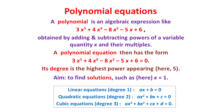A polynomial is an algebraic expression like the one shown here: 3x to the fifth plus 4x to the fourth minus 8x squared minus 5x plus 6, which is obtained by adding and subtracting powers of a variable x and their multiples, such as 3 times x to the fifth and minus 8 times x squared. The degree of a polynomial is its highest power — here the degree is 5, because the highest power appearing is x to the power 5.